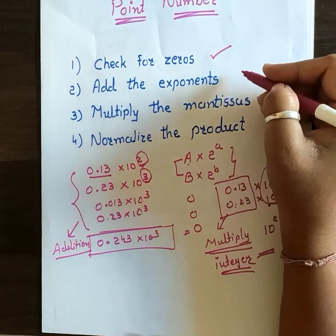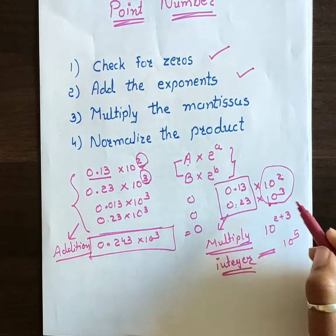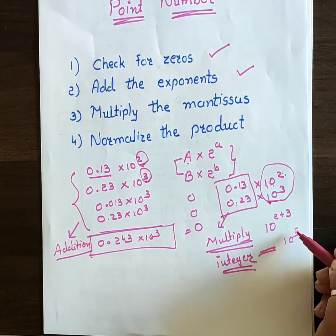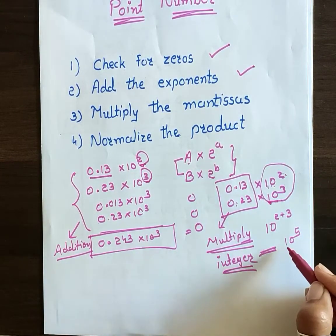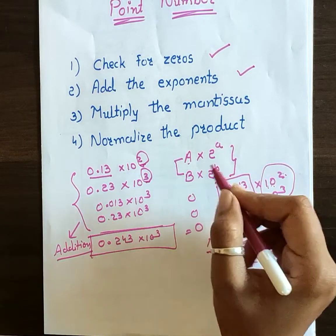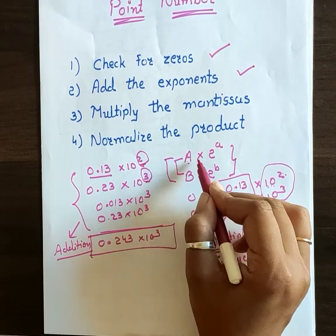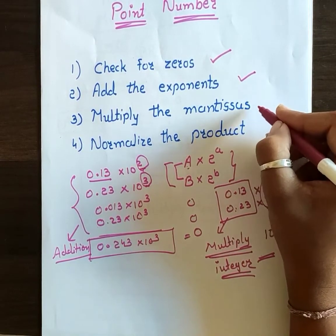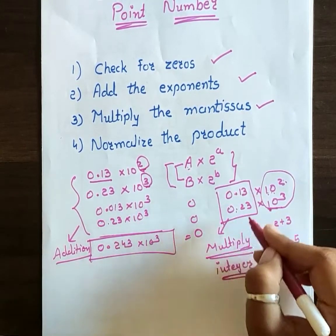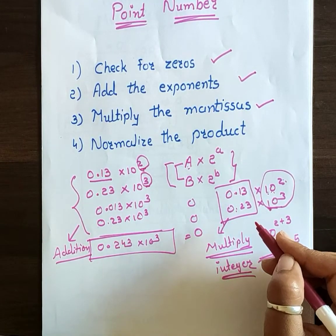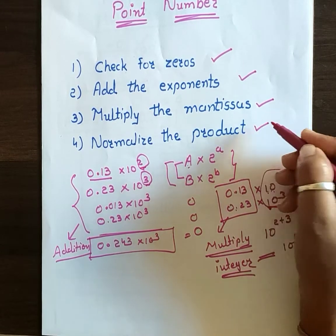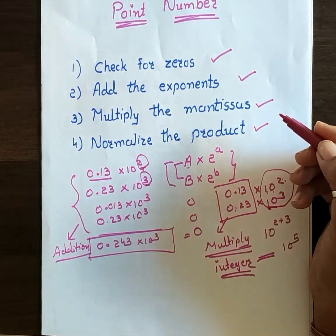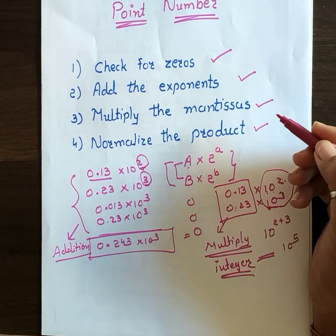If they are not zero, then we add the exponents — 10 raised to 2 and 10 raised to 3, giving 10 raised to 5. In a computer this is done in binary form: A into 2 raised to A, and B into 2 raised to B. Then we multiply the mantissas using our basic algorithm, and finally we normalize the product — whatever answer we get, we normalize it. Now we will see the flowchart of this.